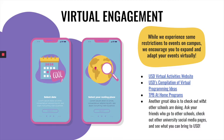Our top tip is to think creatively and out of the box. There are some resources attached on the USD Virtual Activities website, where you can also post your virtual events. You can check out the TPB at home programs and we also highly suggest checking out what other schools are doing — ask your friends, look at social media pages, and see what you might be able to bring virtually to USD. Keep in mind that some students might be attending USD from their homes, so think inclusively about how to get them connected.